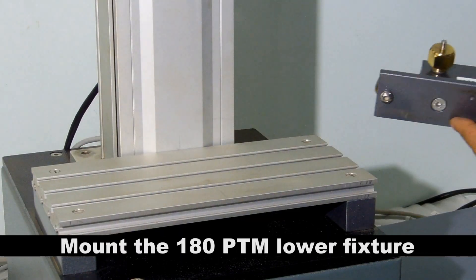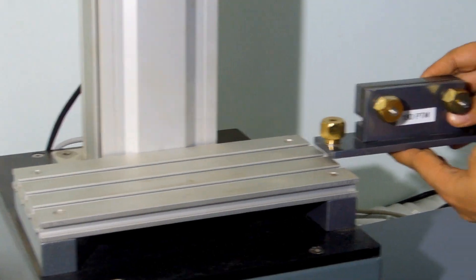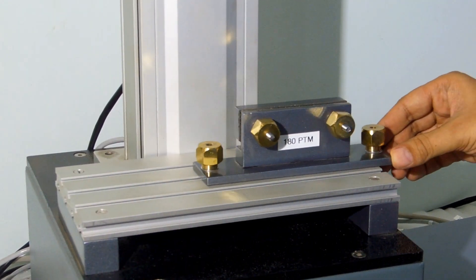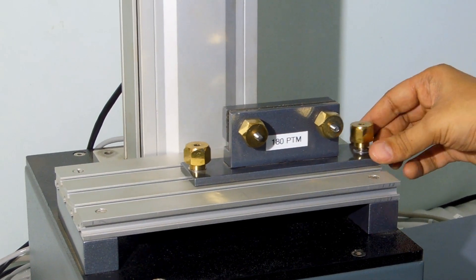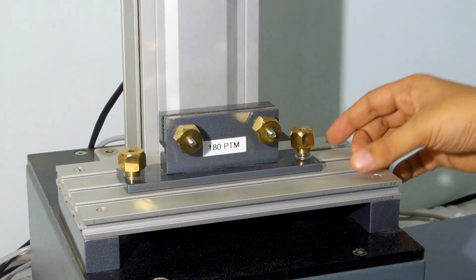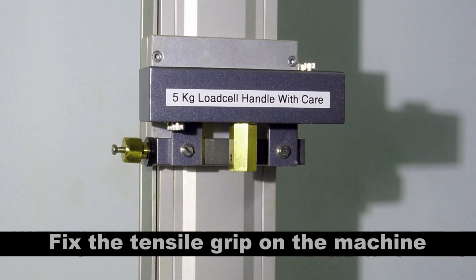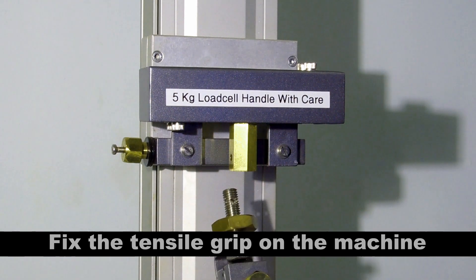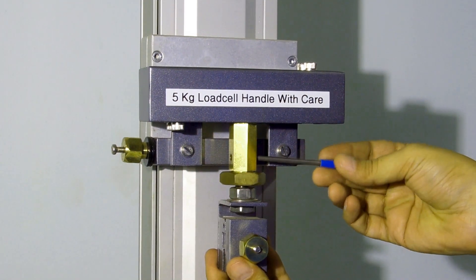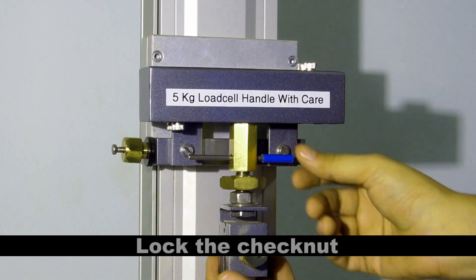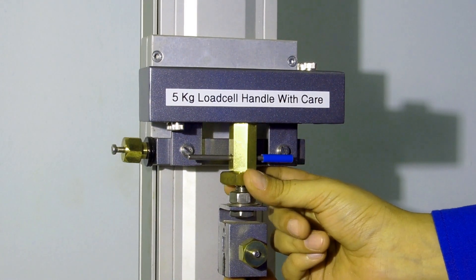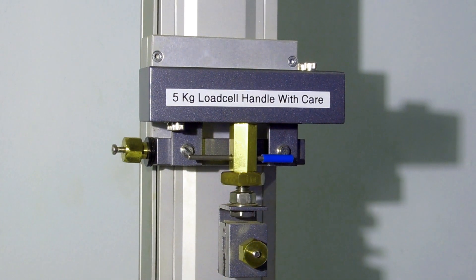Mount the 180 degree peel test lower fixture on the machine. Fix the tensile grip on the machine. Lock the check nut. Switch the controller on using the red switch present at the back side of the controller.